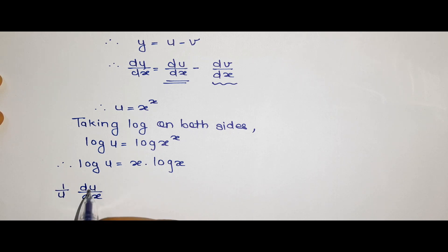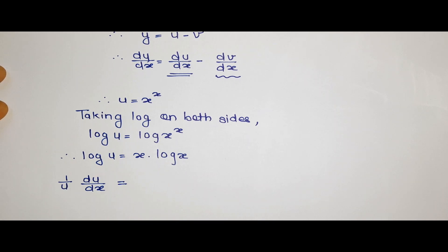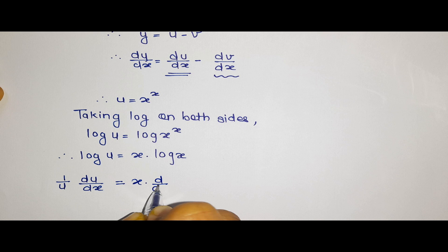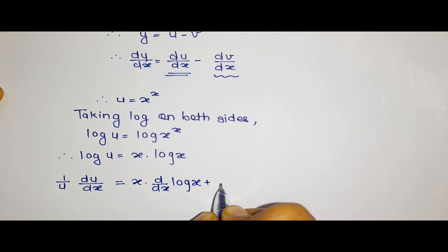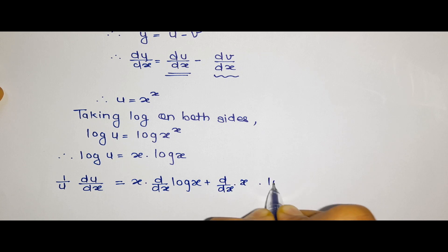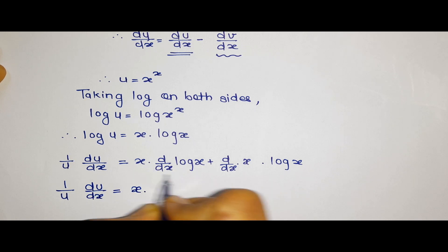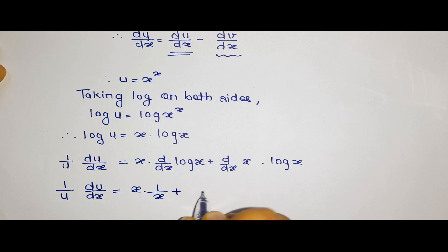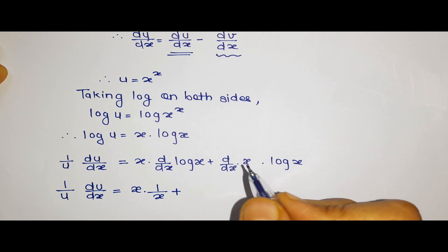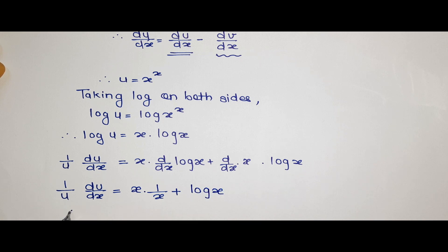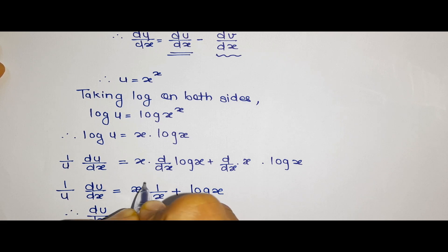Now to find the differentiation of this term, we get 1 by u into du by dx on the left side, since the differentiation of log u is 1 by u. On the right side, we apply the product rule of differentiation, giving us x into d by dx of log x plus d by dx of x into log x.